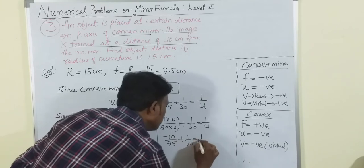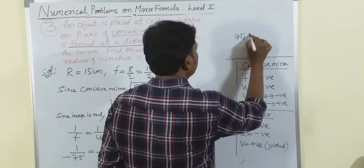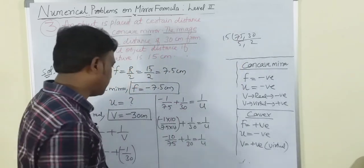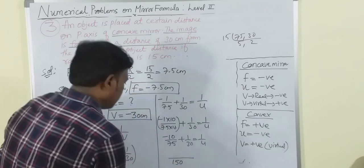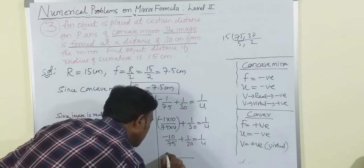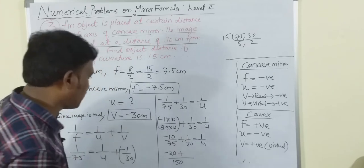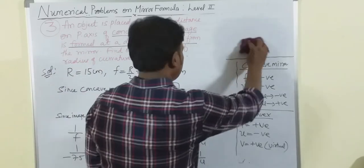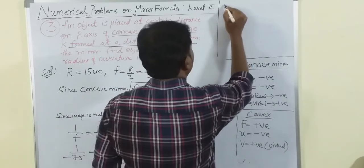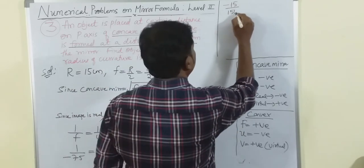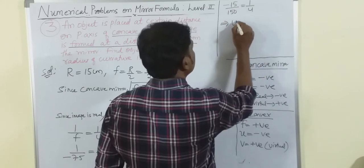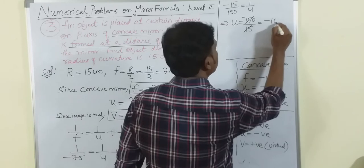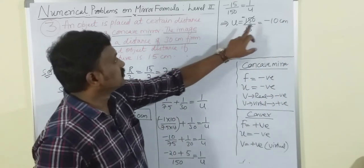Finding LCM of 75 and 30: LCM = 150. So (-10×2)/150 + (5)/150 = 1/u, giving (-20 + 5)/150 = 1/u, so -15/150 = 1/u. Therefore u = -150/15 = -10 centimeters.